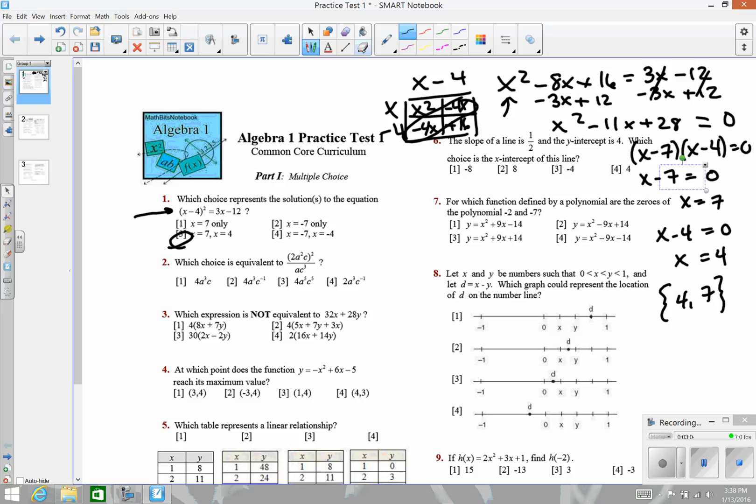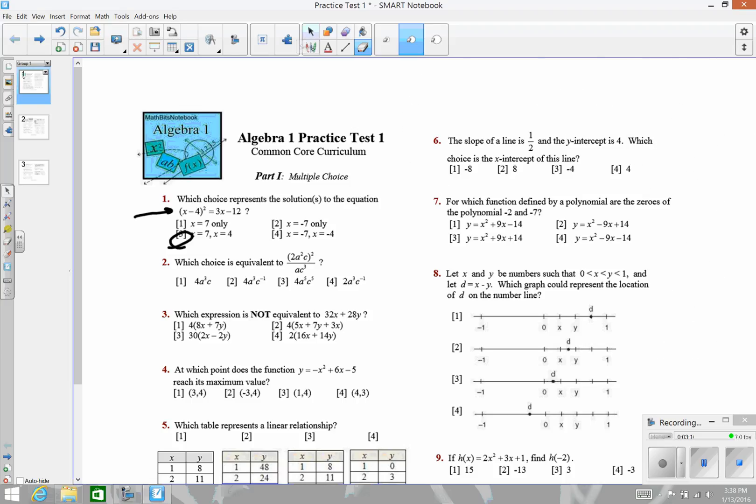Okay, moving on to number 2. We have 2a squared c, that entire quantity squared in the numerator. I'm going to square that numerator by taking my 2 in parentheses, squaring that, taking the a squared, squaring that by multiplying those two exponents, and taking the c and squaring that.